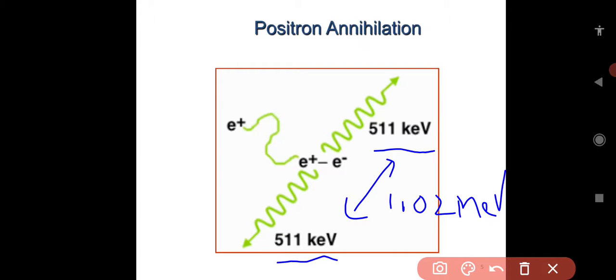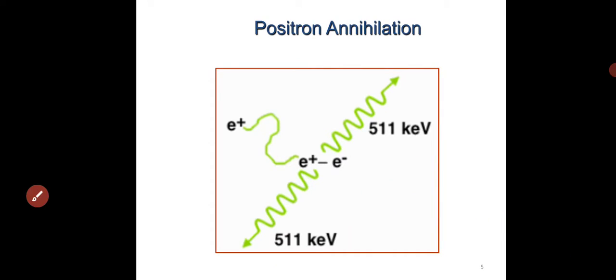It is reverse process of pair production. Next class I will discuss interaction of gamma rays with matter: photoelectric effect, Compton effect, and pair production. Here positron undergoes decay with parent nuclei which gives daughter nuclei, stable end product, and finally you get positive charge particle, that is positron.